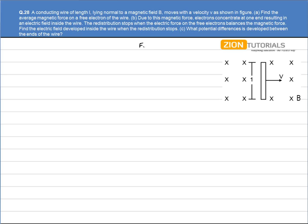Force on electron and proton is given by Q into V cross B. The electron will move downward and the proton will be collected upward due to this force. So the average magnetic force acting on the free electron of the wire will be given by Q, the charge of the electron, into V into B.